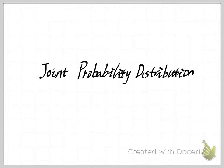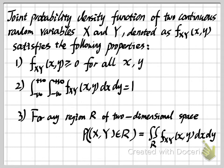If we have two random variables, we can use a joint probability distribution to describe it. Similar to the discrete and continuous random variable cases — where we use a probability mass function or probability density function — if we have two continuous random variables, we can use a function similar to the probability density function. This is called the joint probability density function.